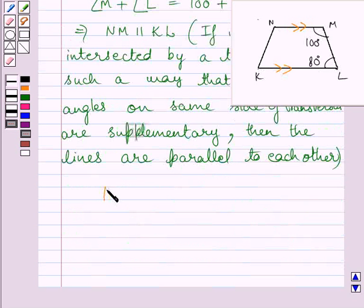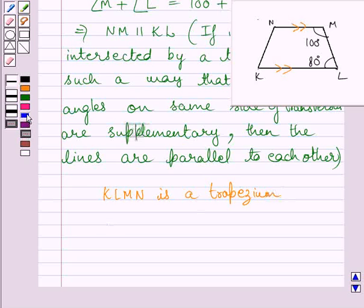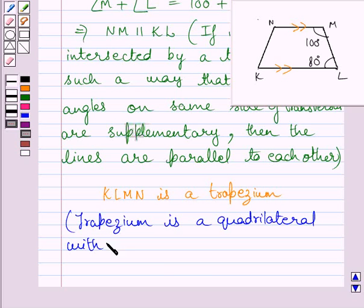So, we get KLMN is a trapezium. Trapezium is a quadrilateral with a pair of parallel sides.